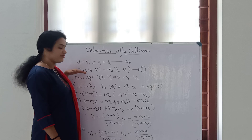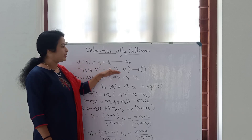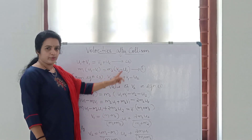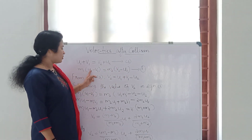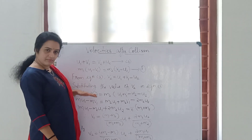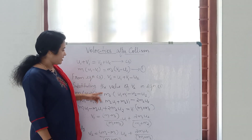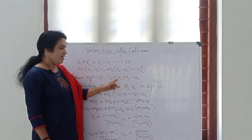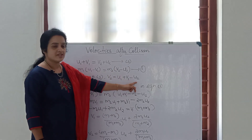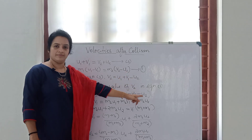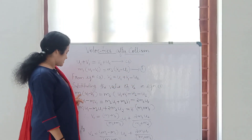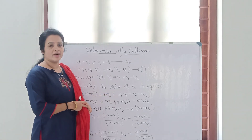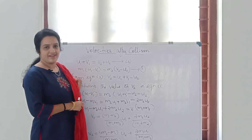We have Equation 1: m1 into u1 minus v1 is equal to m2 into v2 minus u2. If we substitute the value of v2, we get: m1 into u1 minus v1 is equal to m2 into (u1 plus v1 minus u2) minus u2. So that is: m1 into u1 minus v1 equals m2 into u1 plus v1 minus u2 minus u2.